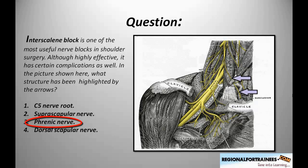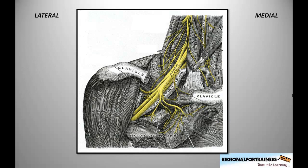I find this question particularly interesting because there are two additional facets to it, which we'll learn soon. Let's have a look at this diagram, which shows us the brachial plexus anatomy. The brachial plexus is the constellation of nerve bundles formed by the upper cervical and T1 nerve roots collectively.